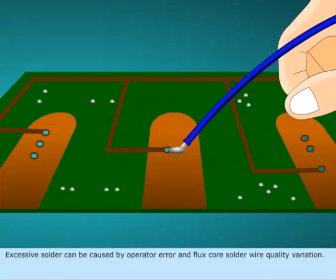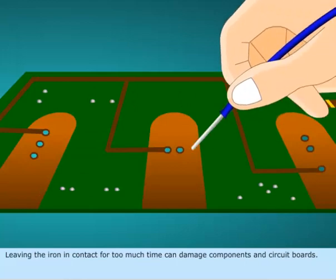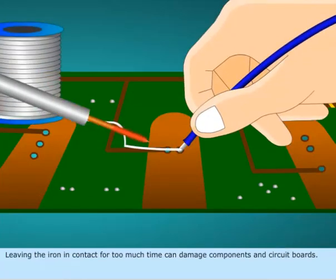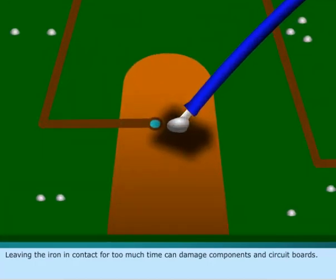Excessive solder can be caused by operator error and flux core solder quality variation. Leaving the iron in contact for too much time can damage components and circuit boards. The burns or defects can be seen easily on boards.